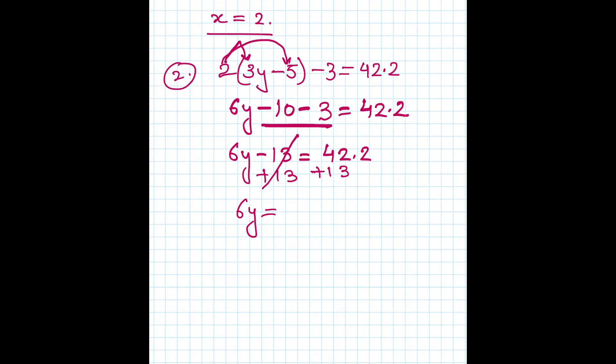We have 6y equals, now we have to do 42 plus 13. You can do it using calculators, you can do it in your head, or as we have decimals, decimal under decimal, we put a zero there and now you can add. So that becomes 2, decimal 5 and 5.